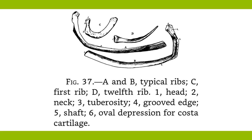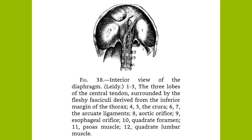Muscles of the Chest. The spaces between the ribs from the tubercle of the rib behind to the cartilage in front are filled by the external intercostal muscles, which pass downward and forward from the lower border of one rib to the upper border of the one below. There are therefore eleven pairs of these muscles. There are also eleven pairs of the internal intercostals, which commence at the sternum and extend back to the angle of the rib. These extend downward and backward. The external intercostals raise and evert the ribs in inspiration. The internal depress and invert them in expiration.